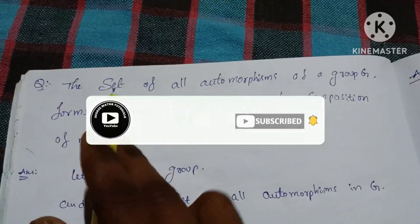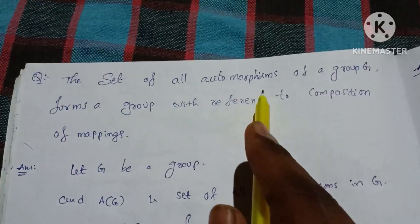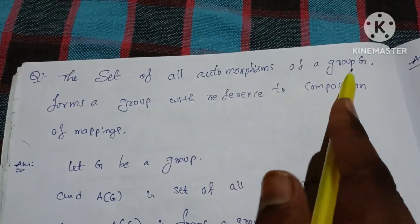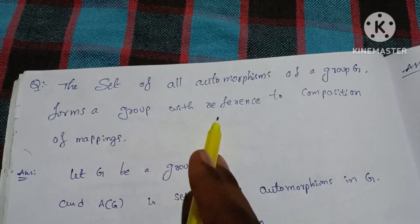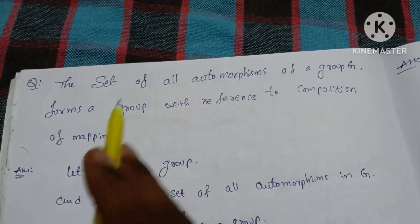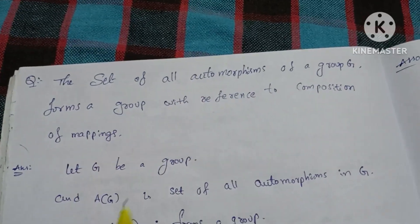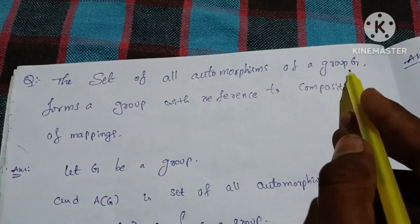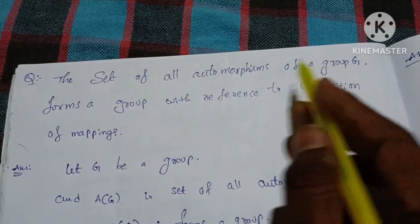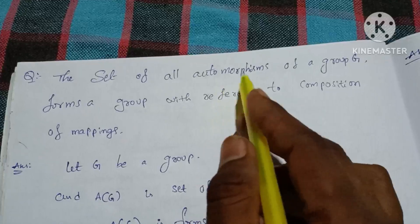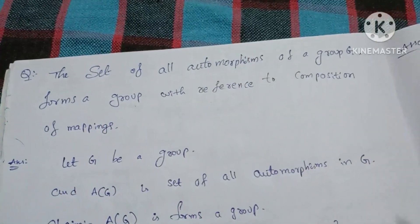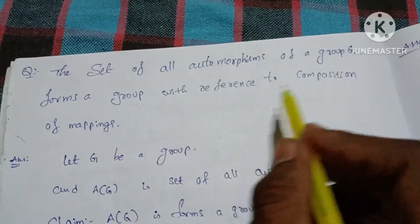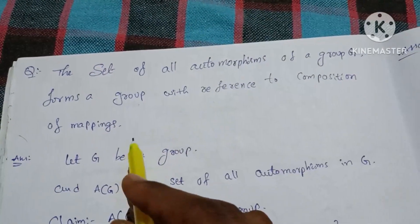In this video, the set of all automorphisms of a group G forms a group with respect to composition of mappings. The group forms a group with respect to composition mapping.